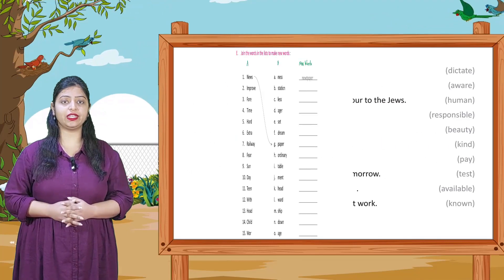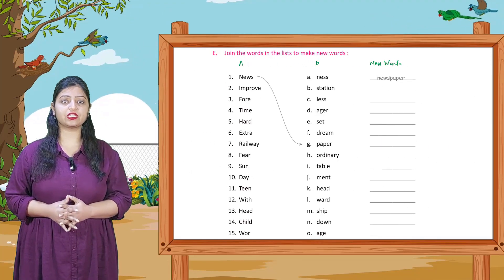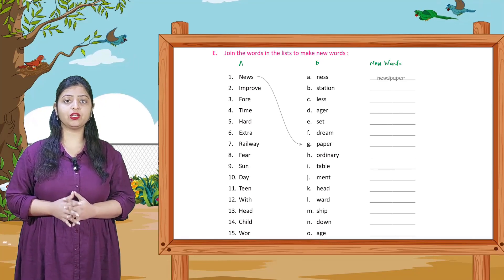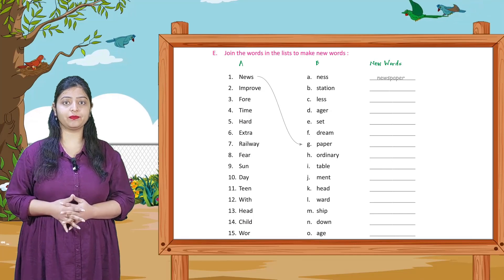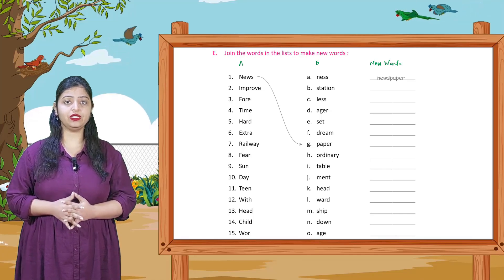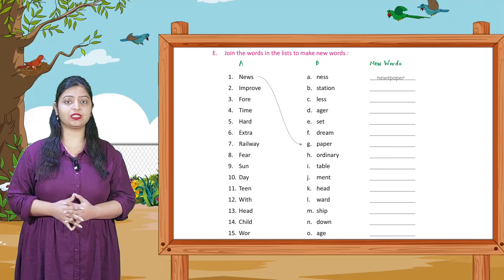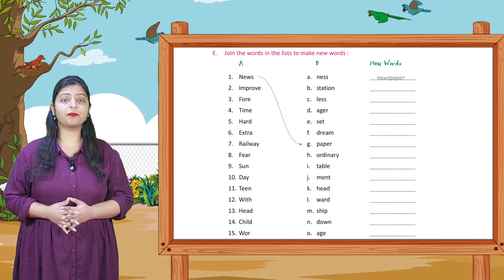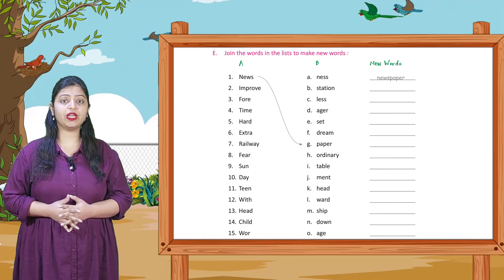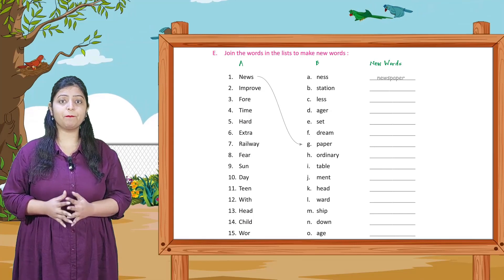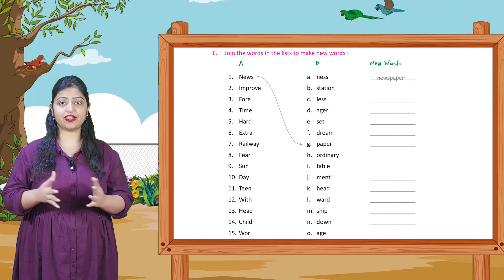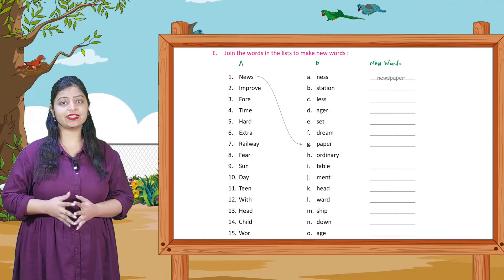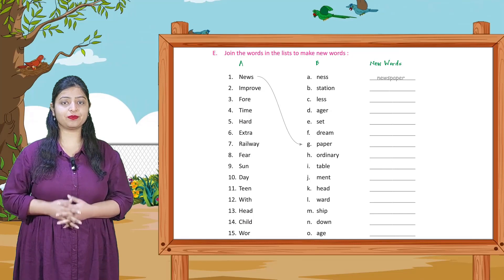Section E: Join the words in the list to make new words. Aapko A aur B column mein jo words diye gaye hain unhe join karke naya word banana hai. Jaise: news + paper = newspaper. Second word 'improve' mein aap '-ment' add karenge: improvement. Isi tarike se baaki aap apne aap match karke naye words banayenge.